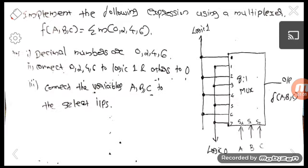The problem type is: implement the following expression using a multiplexer, where the function is given in terms of minterms. For example, f(a, b, z) = Σm(0, 2, 4, 6). To solve this, we first determine which mux to use. The highest minterm value here is 6, so we choose a mux with inputs just higher than that maximum value.